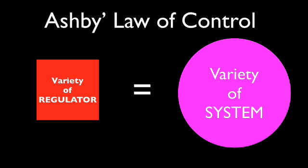Ashby's law works more like an equation. We are in the presence of a self-evident truth — it is not dependent on experiment. Basically, it means that in order to have a system under control, the variety of the regulator has to match the variety of the system.